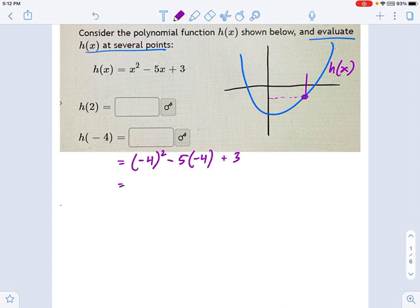(-4)² - that's (-4) times (-4) - that's 16. Negative 5 times (-4) is positive 20. And then you have plus 3. So this is going to equal, let's see, 36, 39. That would be my answer there. That's the result when you plug negative 4 into your equation.